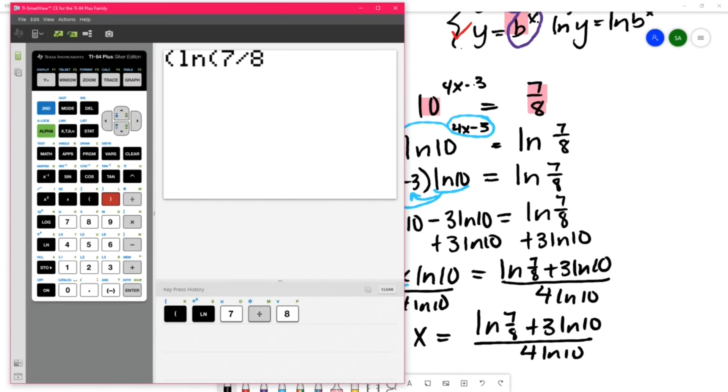We have natural log of 7 eighths plus 3 natural log of 10. We need to close parentheses for the numerator.